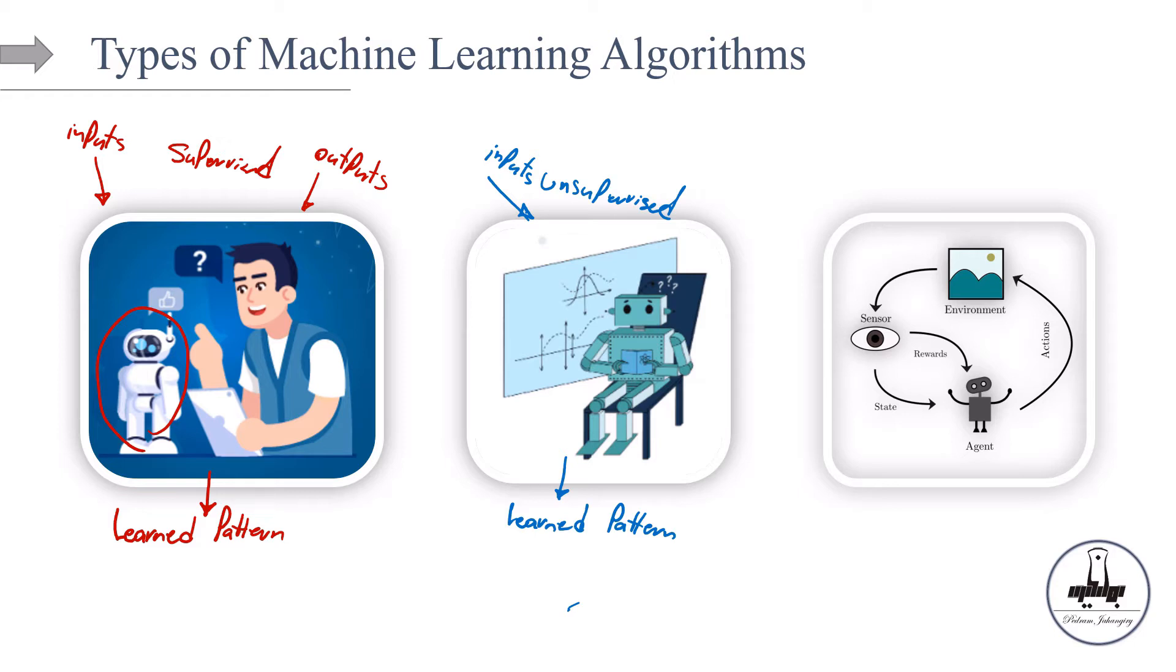Okay. Now that you know what is supervised and what is unsupervised, let's talk about the third type, which is reinforcement learning.